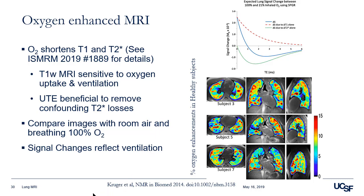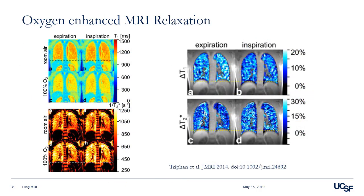For the last bit, I'll talk about inhaled gas MRI techniques. First is oxygen-enhanced MRI. The premise is that increased concentrations of oxygen will shorten T1, thereby increasing signal intensities — it'll also shorten T2*. If we're using UTE, T2* shortening doesn't become so much of an issue. The protocol is relatively easy: breathing 100% oxygen is quite safe and easy to do. You can get oxygen-enhanced signal changes that represent ventilation. If you quantify, there's a shortening in T1 when breathing 100% oxygen versus breathing room air, and a T2* change as well — very valuable information for measures of ventilation.